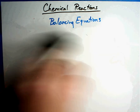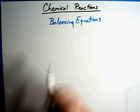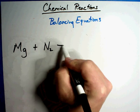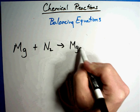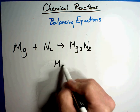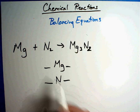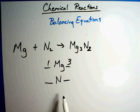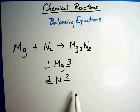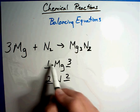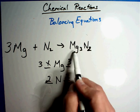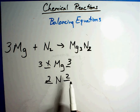Let's try one more. What happens if you have Mg plus N₂ produces Mg₃N₂? Let's count Mg's and N's. There is one Mg on the left and three Mg's in Mg₃N₂ on the right. Two N's on the left and two N's on the right. To fix the Mg's I put a three in front of Mg — the three doesn't count for N. Three Mg's and three Mg's. Two N's and two N's. Done.